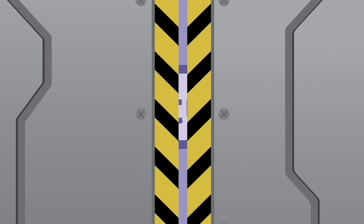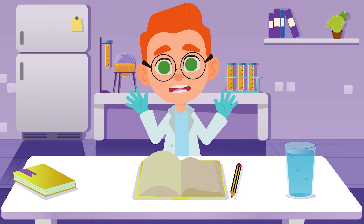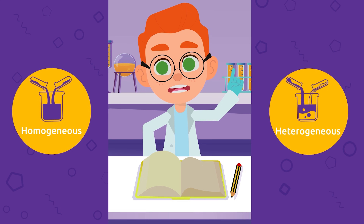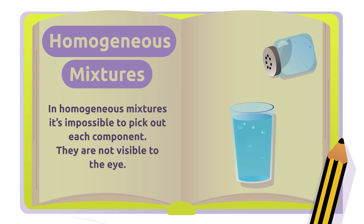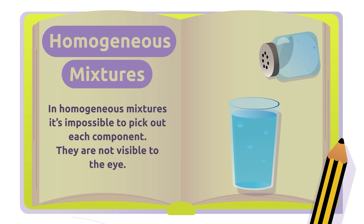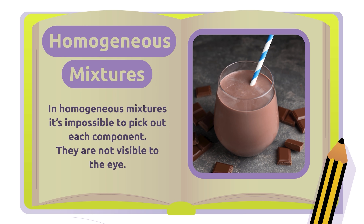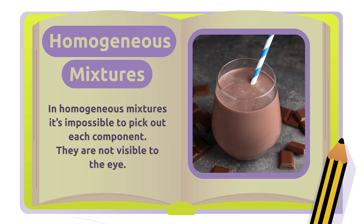A mixture is a combination of two or more pure substances. There are two types of mixtures: homogeneous and heterogeneous. In homogeneous mixtures, it's impossible to pick out each component — they are not visible to the eye. Solutions like water with salt or chocolate milk are homogeneous mixtures. Can you think of another example of a food that is a homogeneous mixture and that we use a lot in cooking?